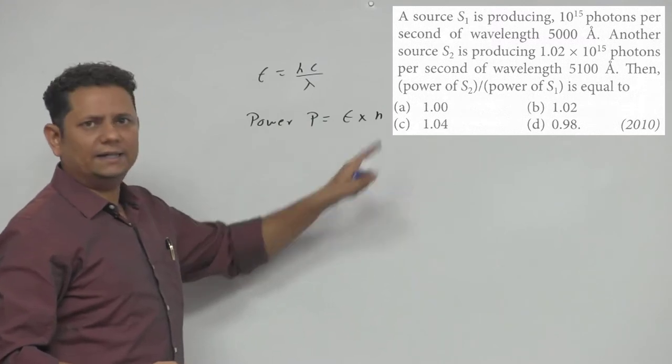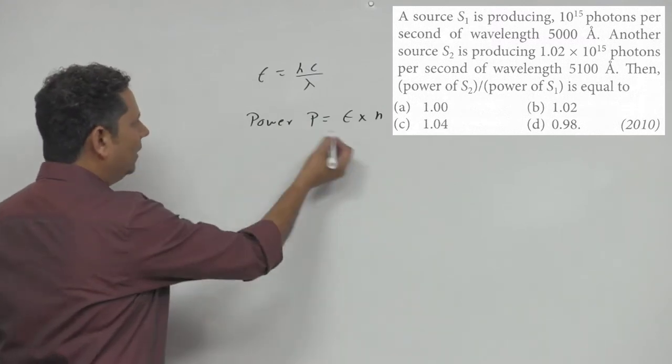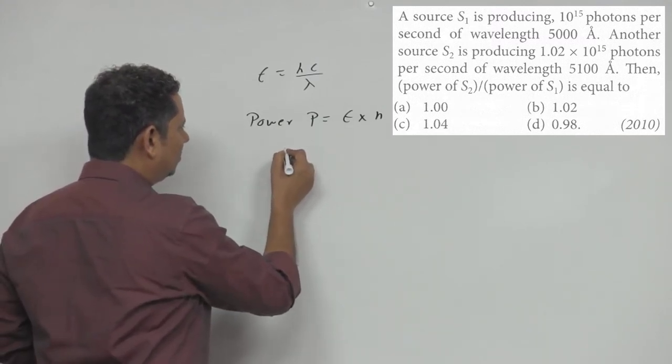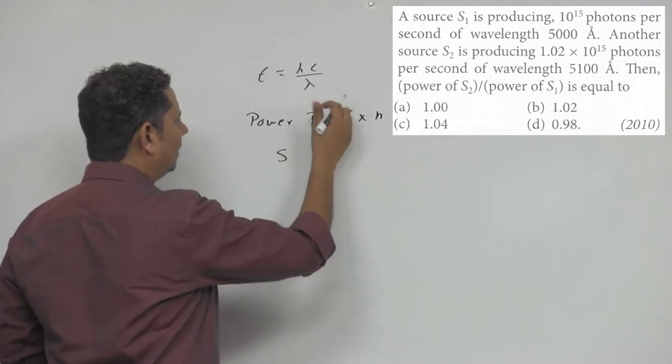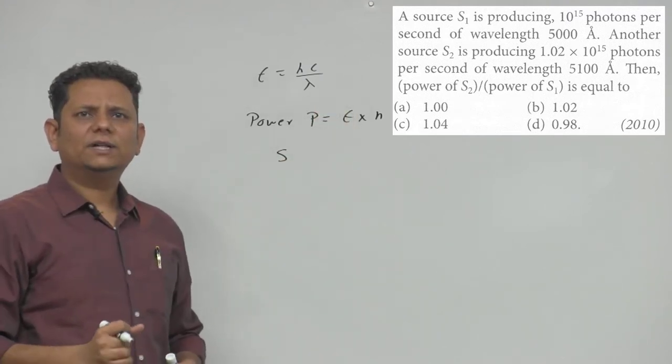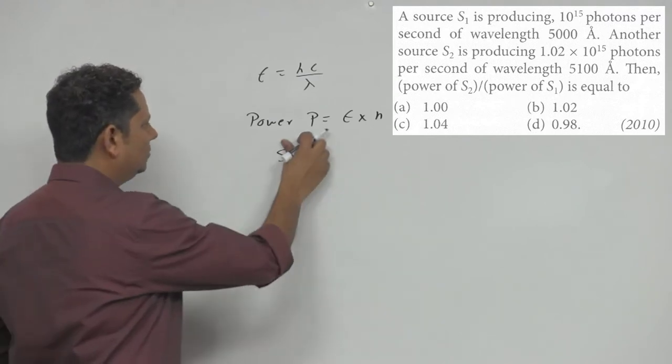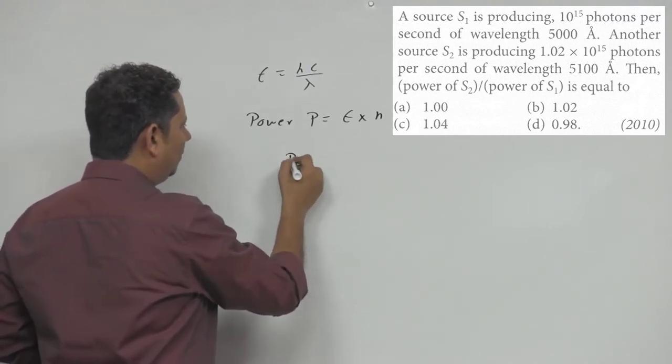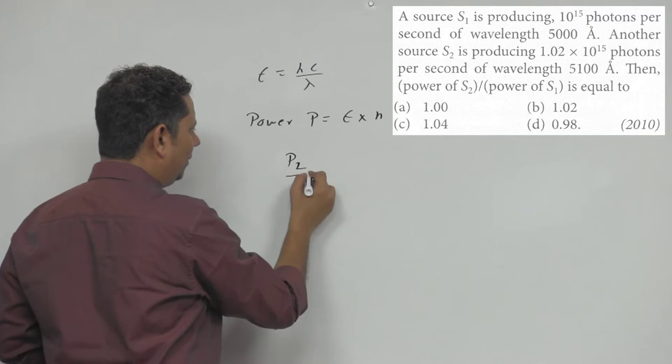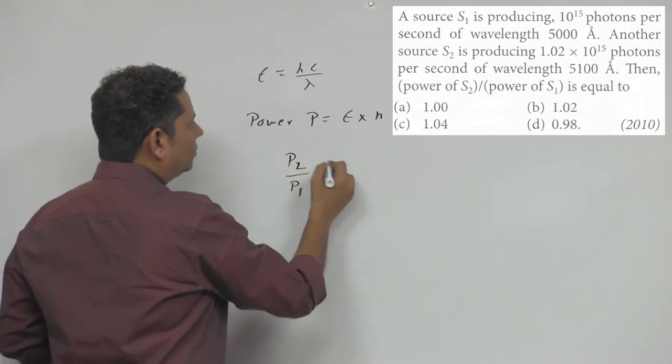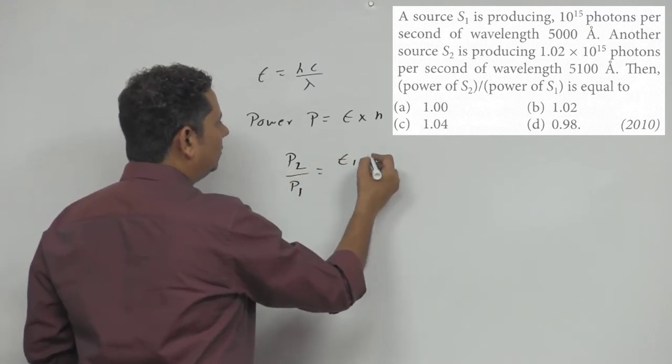The per second factor comes in here. This is your total power. So for source S1... let me use different notation. Since they've used S1 and S2, let's use P1 and P2. We need to find P2 by P1, alright.